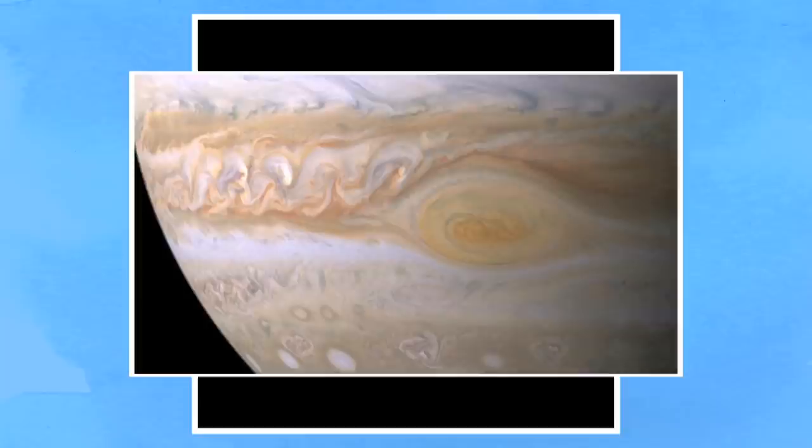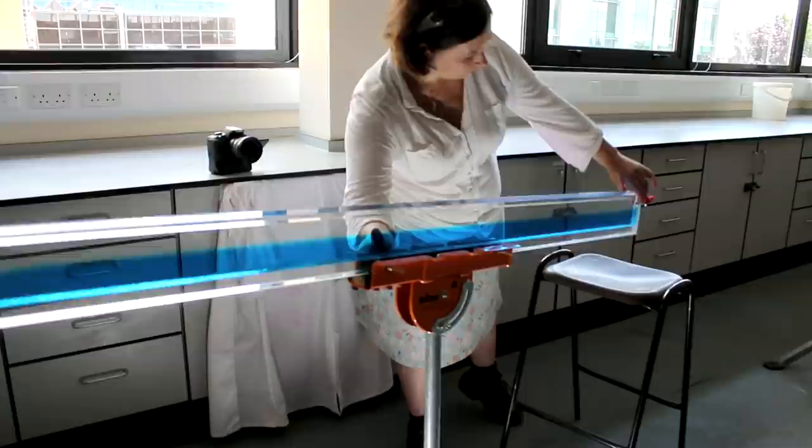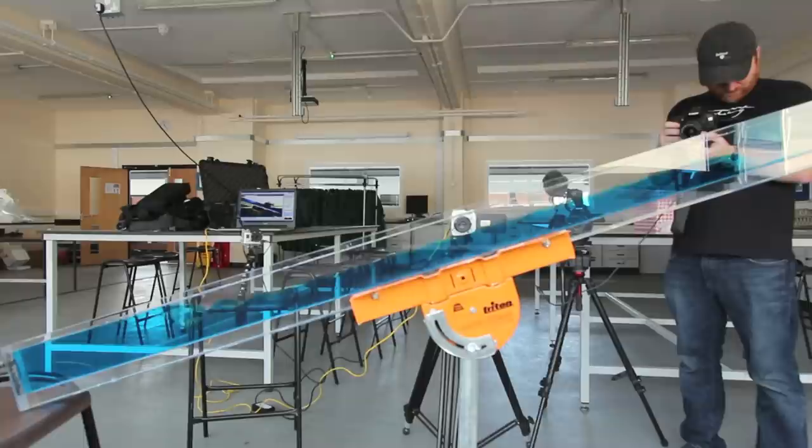You see these kind of Kelvin-Helmholtz instabilities in the cloud patterns on Jupiter, on the Sun. If you have a jet of material coming out of the center of a galaxy and it starts to wiggle around, that's probably this Kelvin-Helmholtz instability as well.